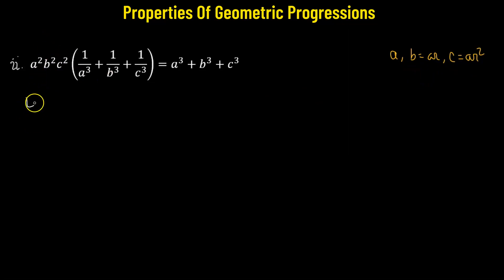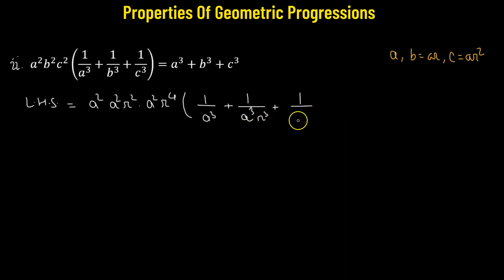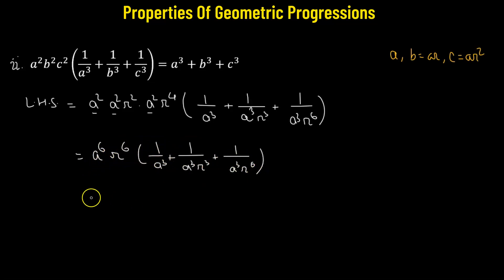We'll start from the left hand side. We have a squared multiplied by b squared, where b squared equals a squared r squared, multiplied by c squared, where c squared equals a squared r to the power of 4. This is multiplied by 1 over a cubed plus 1 over b cubed, where b cubed equals a cubed r cubed, plus 1 over c cubed, where c cubed equals a cubed r to the power of 6. This gives us a to the power of 6 times r to the power of 6, all multiplied by the parenthetical expression. Now we distribute a to the power of 6 times r to the power of 6 to each of the terms within the parentheses.